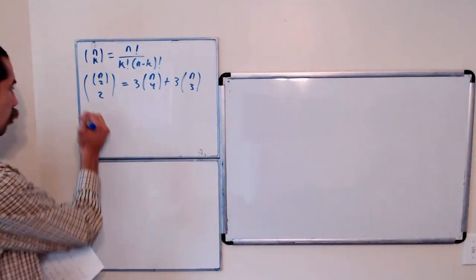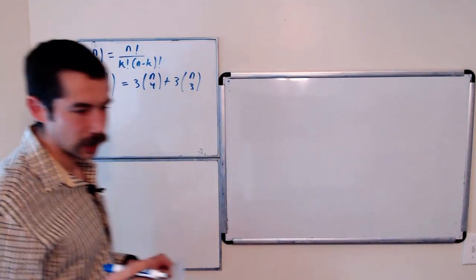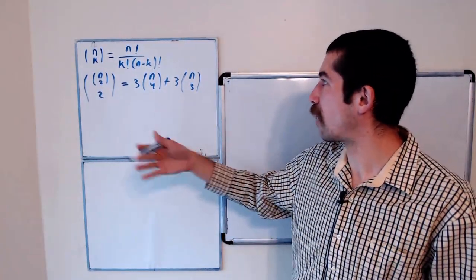So the first thing to note, we're not going to use this formula for the binomial coefficient. It's going to get too messy. What we're going to do is provide a combinatorial proof.